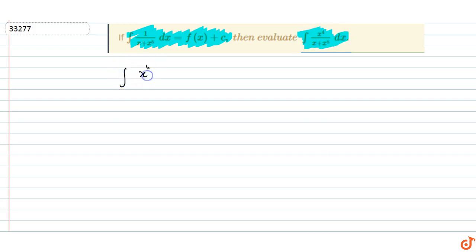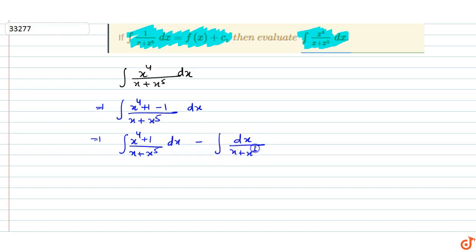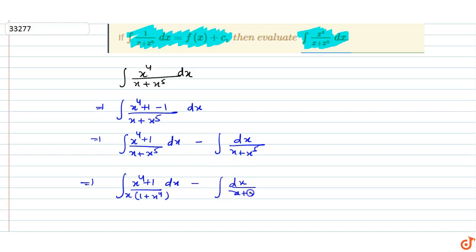Write integration of x to the power 4 upon (x plus x to the power 5) dx as integration of (x to the power 4 plus 1 minus 1) upon (x plus x to the power 5) dx. This splits into integration of (x to the power 4 plus 1) dx upon (x to the power 4) minus integration of dx upon (x plus x to the power 5).